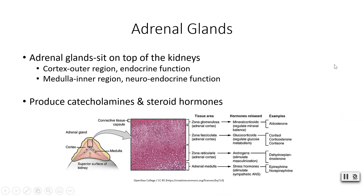Your adrenal glands sit on top of your kidneys. On each side we have two of these, and we have two regions: a cortex, which is the outer region, and a medulla, which is the inner region. We produce all kinds of hormones in your adrenal gland — catecholamines and steroid hormones. Each different region of your adrenal gland is responsible for creating a different category of hormones.